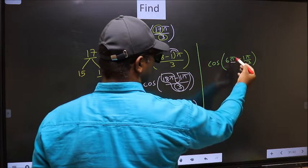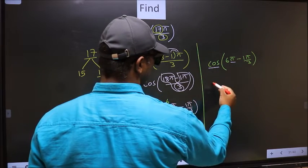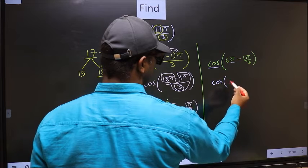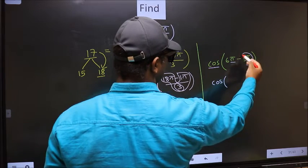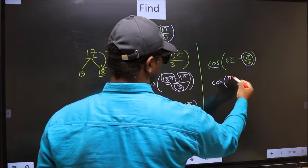Here we have π, so cos is not going to change. It will remain cos. And inside, we get this angle, π by 3.